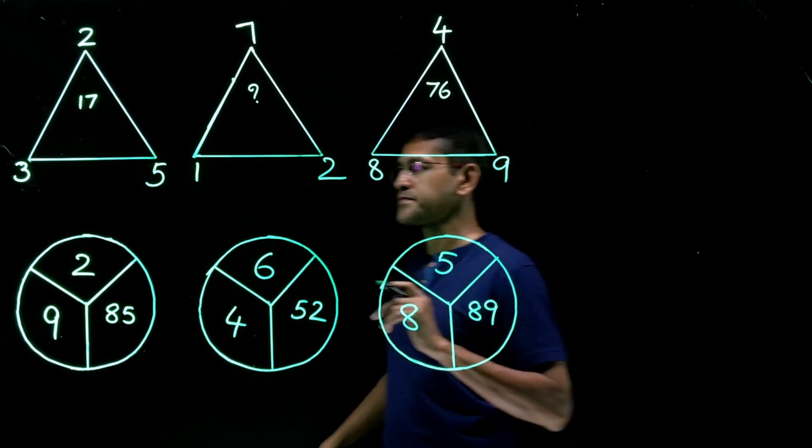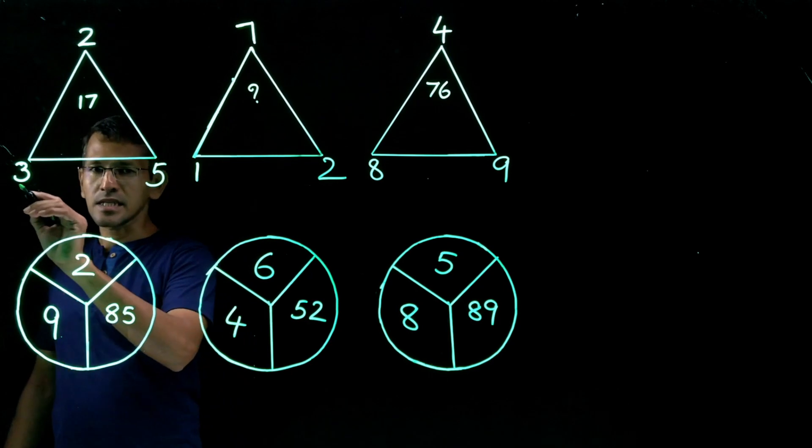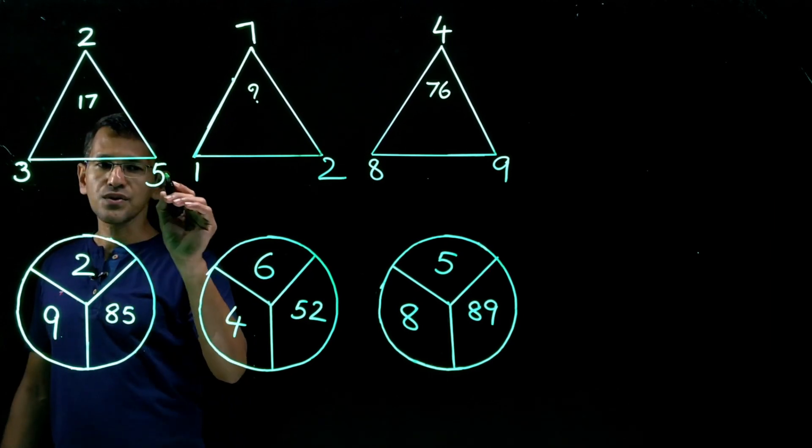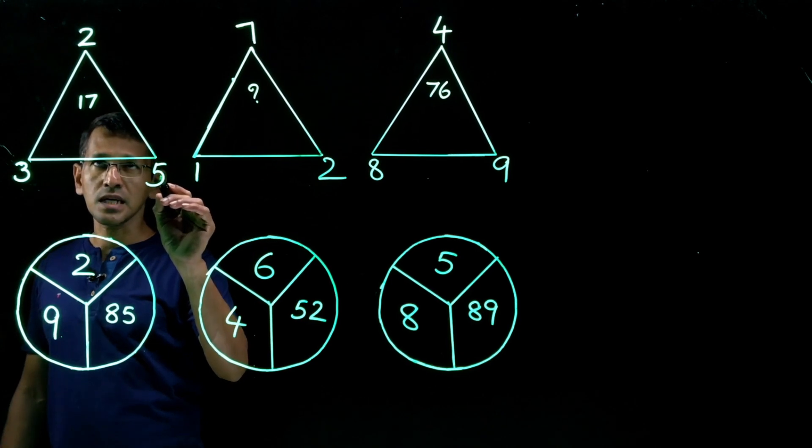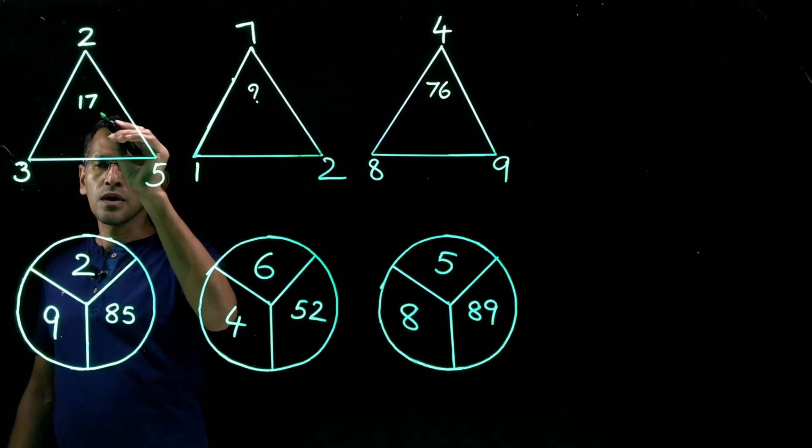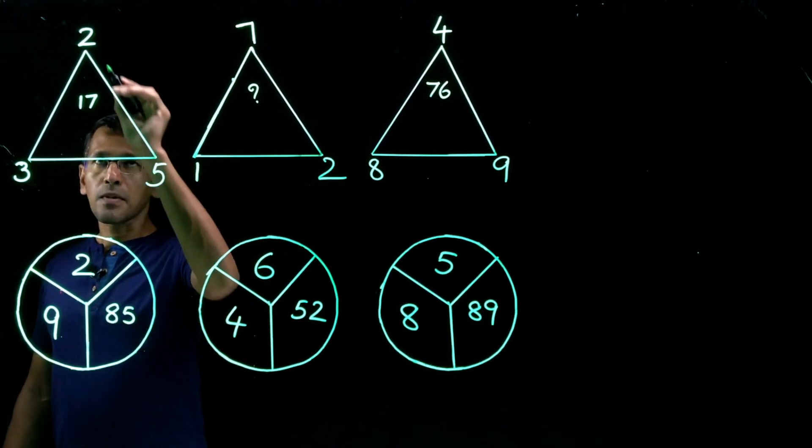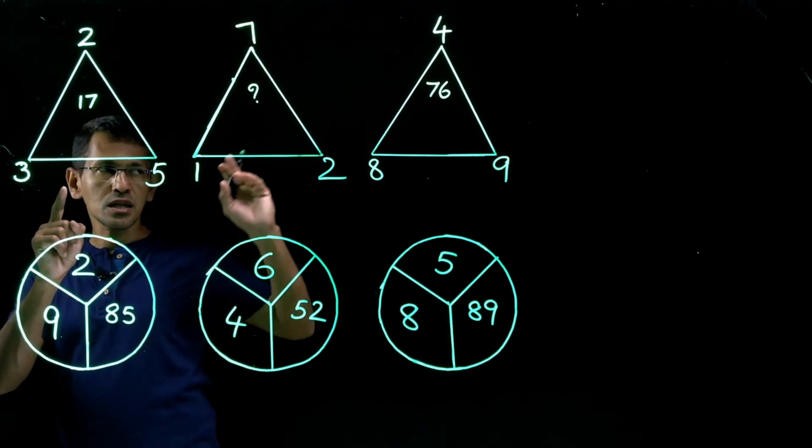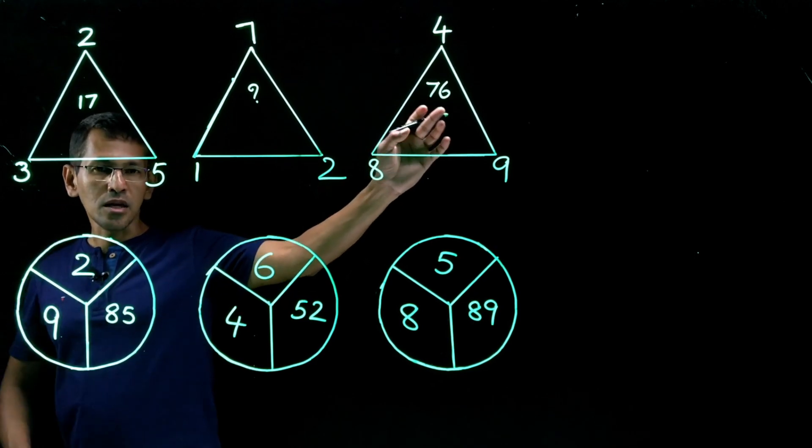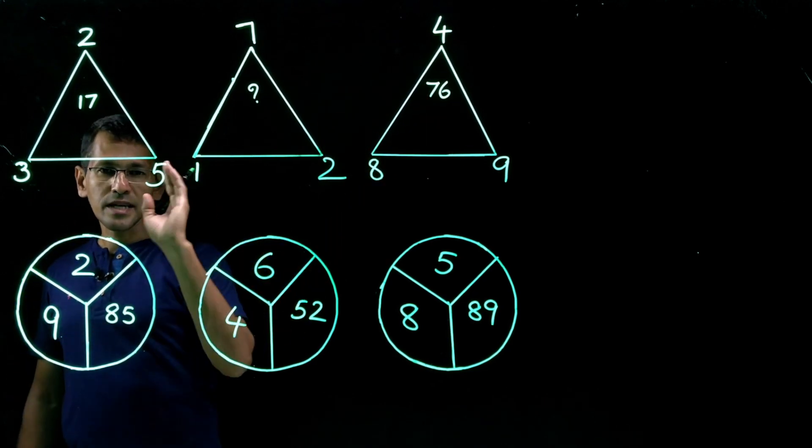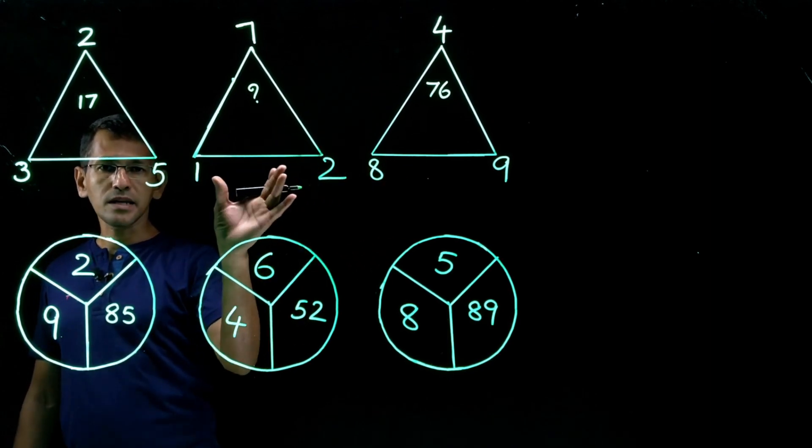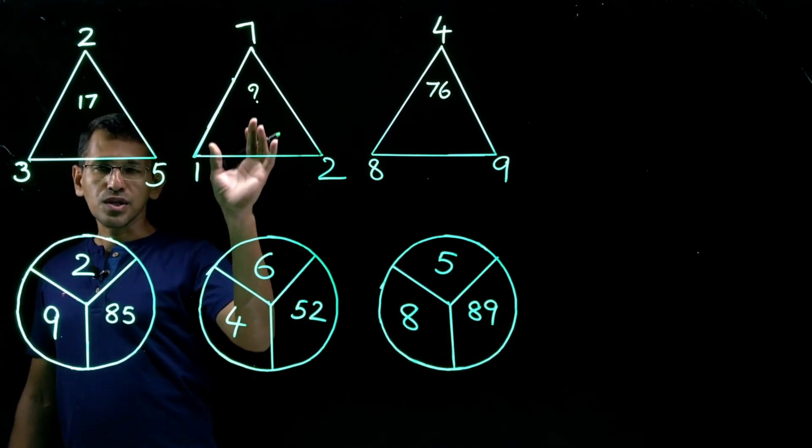So what is the pattern? Well at a glance it's pretty straightforward. At a glance you can see that 3 into 5, 15 and here is a 2. 3 into 5 plus 2, 17. However we need to check it with that third figure if it is the exact same pattern.